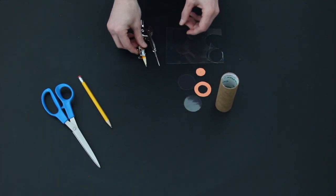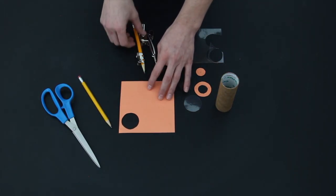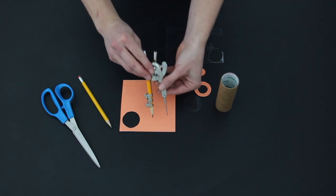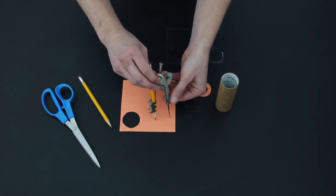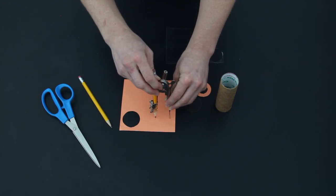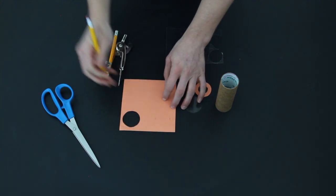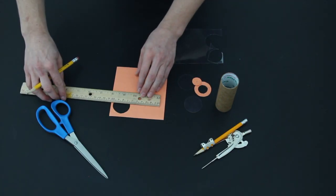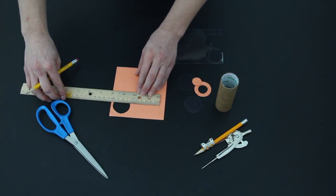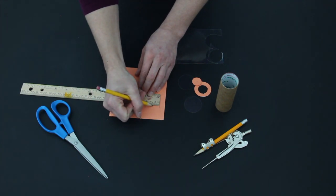First, measure the inside of the tube using the compass. Do this by putting the ends of the compass just inside the ends of the tube and adjusting it so that the pencil and the metal point just barely touch the inside edges of the tube. Then, carefully, without moving the points, transfer the compass to a piece of paper.